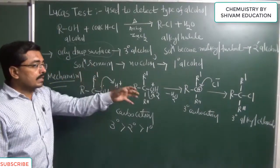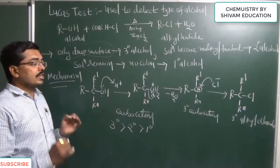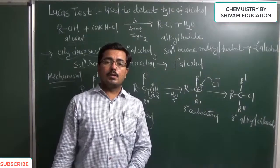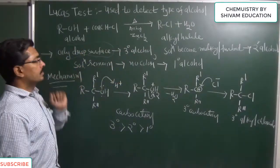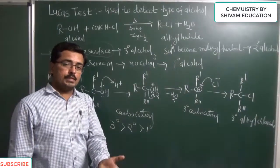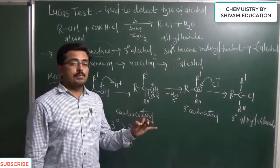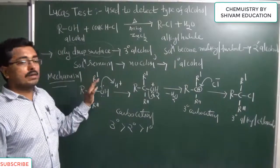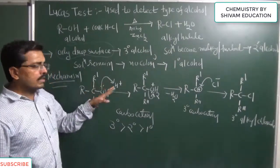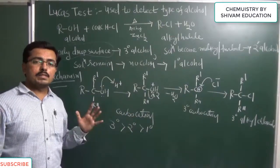Secondary carbocation or secondary alkyl halide will react slowly and primary alcohol reaction does not take place. So very easy things. If you are getting immediately oily drops, then type of alcohol is tertiary alcohol. If solution becomes milky or turbid after few minutes or 5 minutes, then type of alcohol is secondary alcohol. So in case of primary alcohol, reaction is difficult because stability of primary carbocation is lowest. So reaction will not occur, or solution remains as it is and transparent, then type of alcohol is primary alcohol.